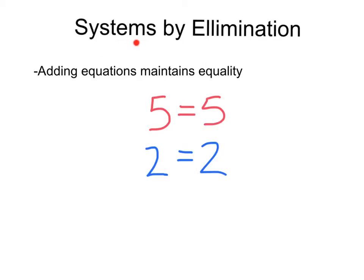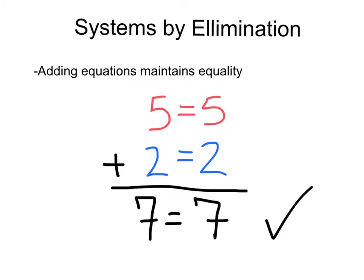So, solving systems by elimination works because adding equations maintains equality. Check this out. 5 equals 5, and 2 equals 2. Where are you going with this? I'm going to show you. If we add these together, that would be 5 plus 2 equals 7, and on this side over here, 5 plus 2 also equals 7, and 7 equals 7. Boom! So, if we add two equations, we can see that equality is going to be maintained.